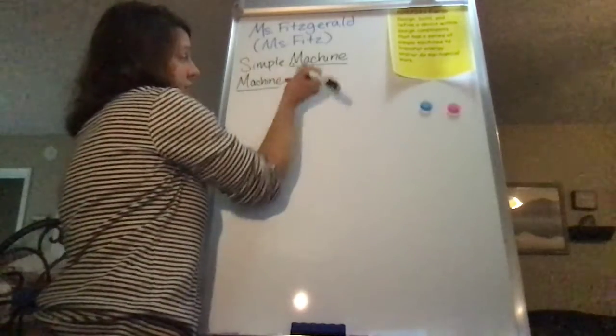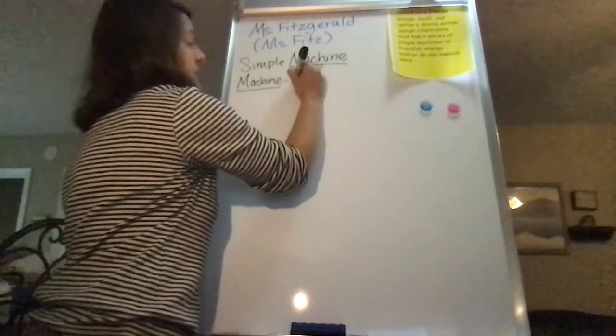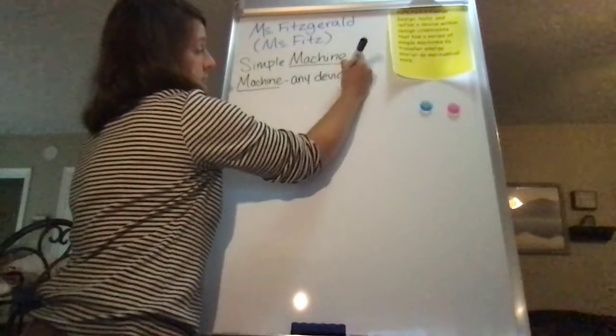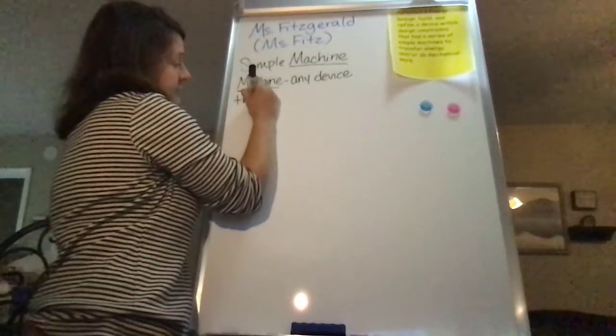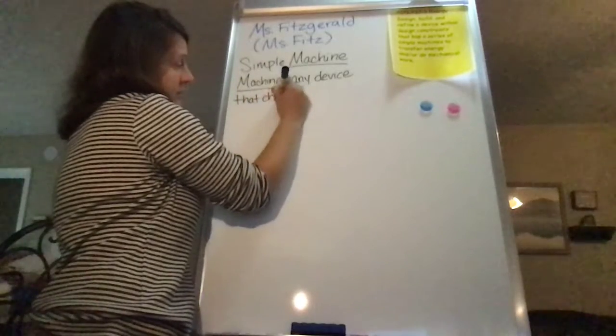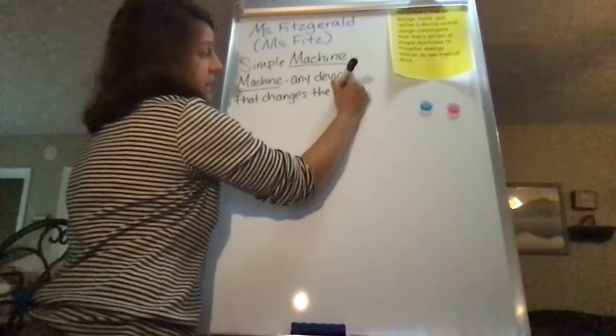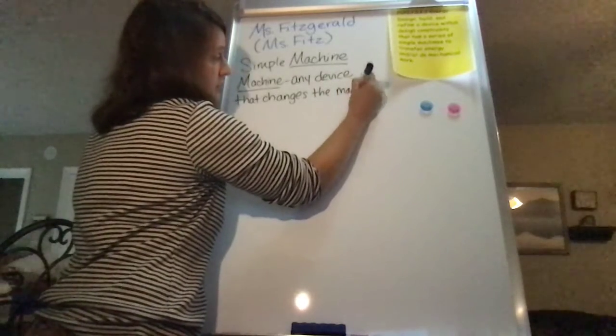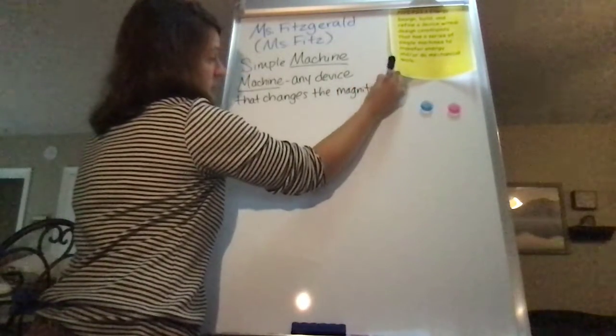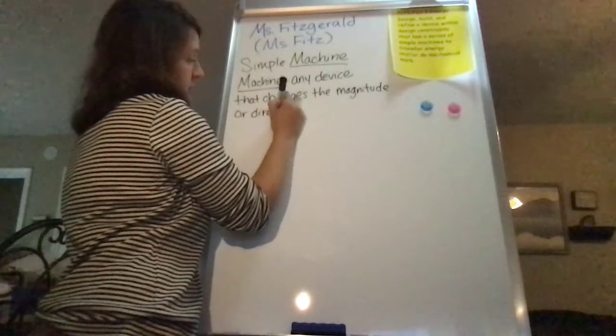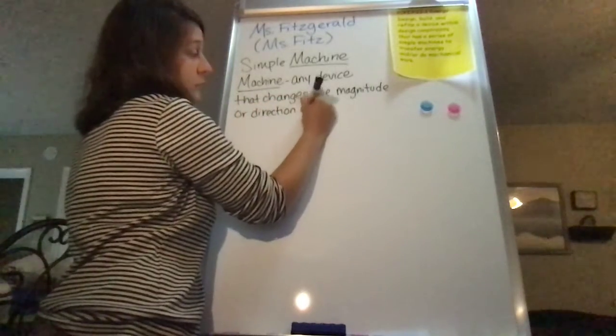So machine, the scientific definition is any device that changes the magnitude or direction of a force.